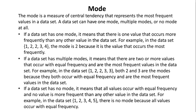Mode. The mode is a measure of central tendency that represents the most frequent values in a data set. A data set can have one mode, multiple modes, or no mode at all. If a data set has one mode, it means that there is one value that occurs more frequently than any other value in the data set. For example, in the data set 1, 2, 2, 3, 4, the mode is 2 because it is the value that occurs the most frequently.